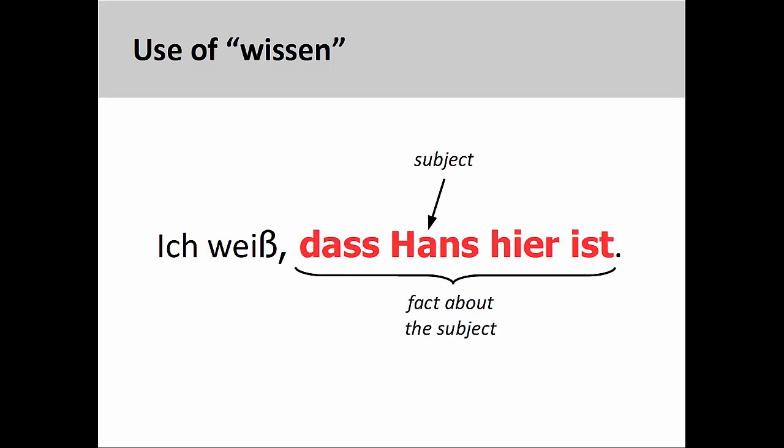The verb Wissen, however, can only be used with facts. The sentence on the screen illustrates this point: 'Ich weiß, dass Hans hier ist' — I know that Hans is here. Although Hans is still the subject of the subordinate clause, additional information has been provided. It is this information — the fact that Hans is present — that is known.